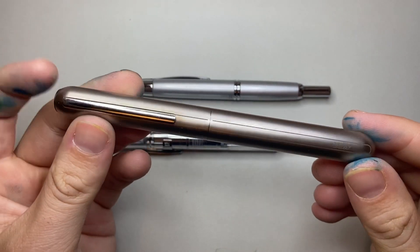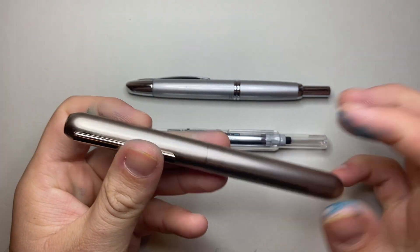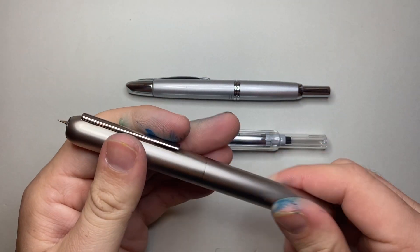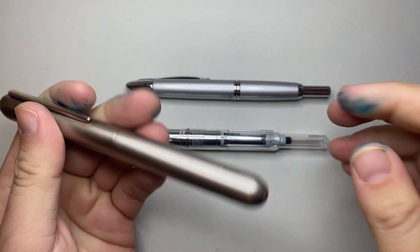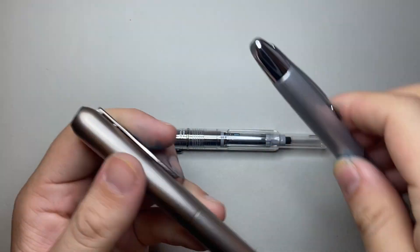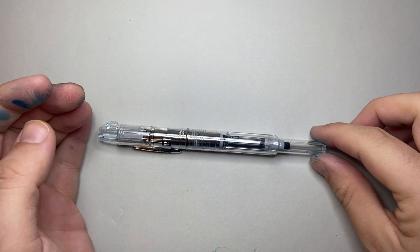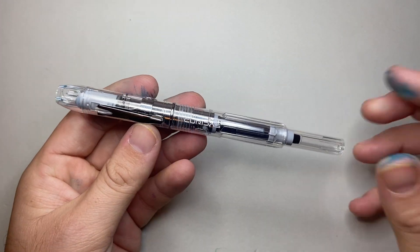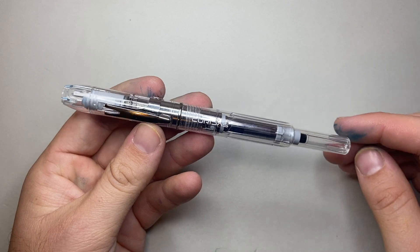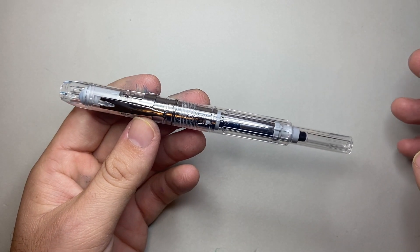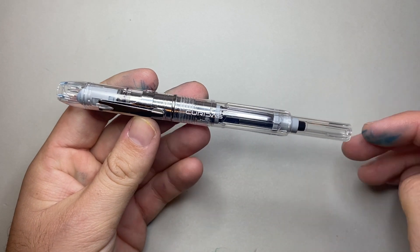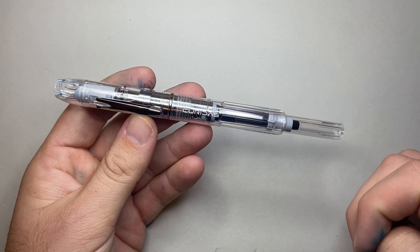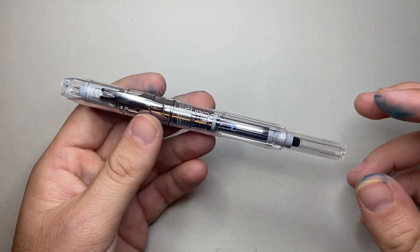And then the Lamy Dialogue 3, which in Australia retails for 500 Australian plus. And the Curitas came out at the beginning of 2020, from what I can remember, and retails for around 100, 120 depending on where you go. So it's a much cheaper option than both of the other retractable fountain pens.